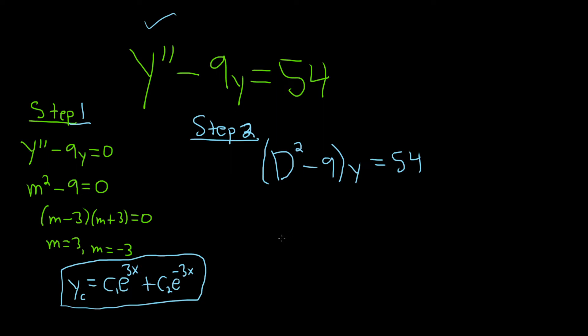Now what we need to do is we need to think about what can we do to annihilate the right-hand side. In other words, what operator can we apply to both sides of this equation that will make the right-hand side 0? Well, in this case, it's really easy. Just d. The derivative of a constant is 0.